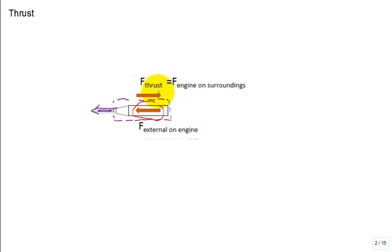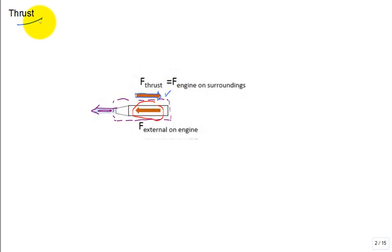Often we'll talk about the engine generating a thrust force — that forward thrust force in the opposite direction that the fluid is going out the back at high speed. That is the force exerted on the surroundings, maybe part of a wing of an aircraft. Sometimes you have to think carefully about which direction this thrust force is acting in.